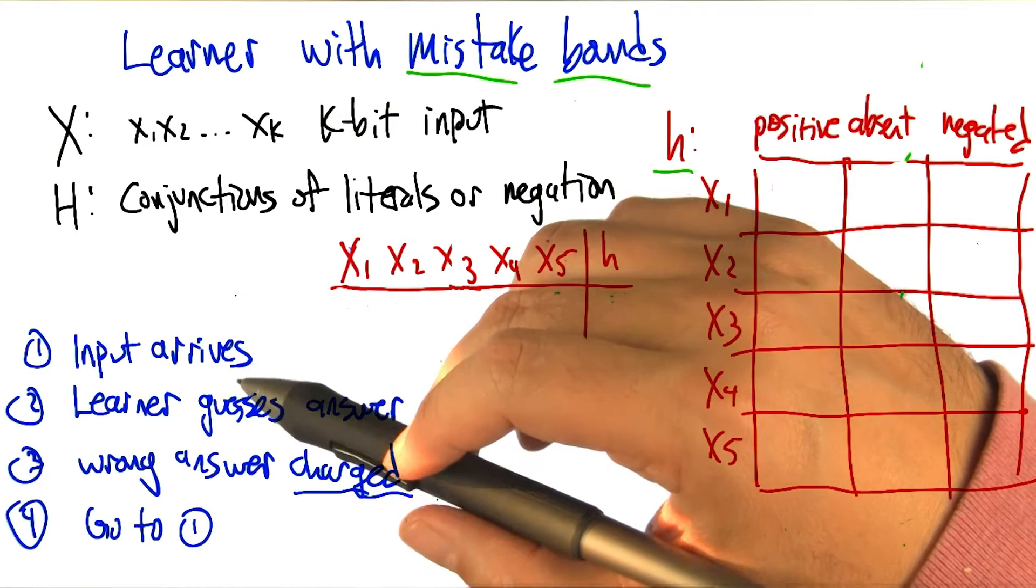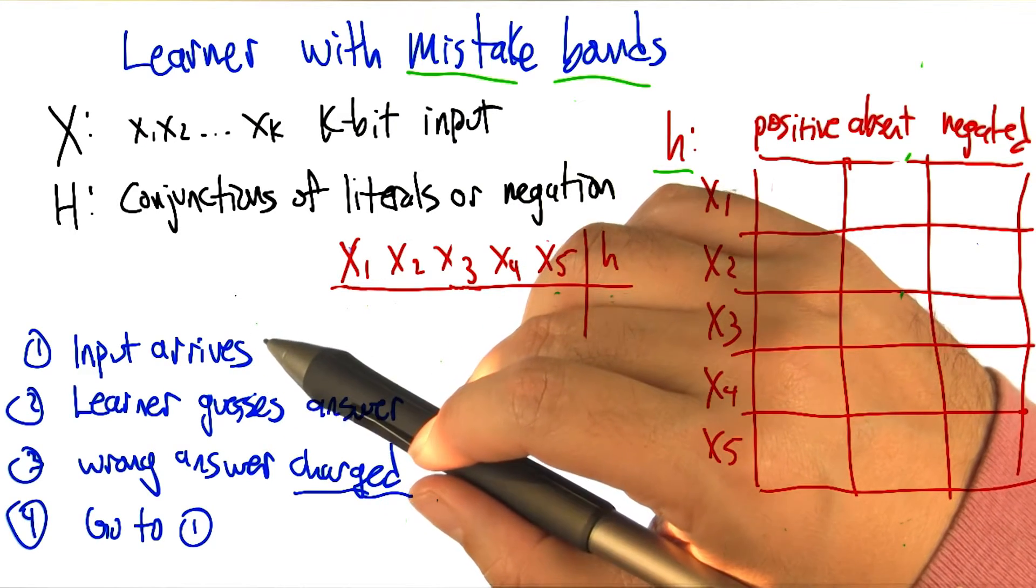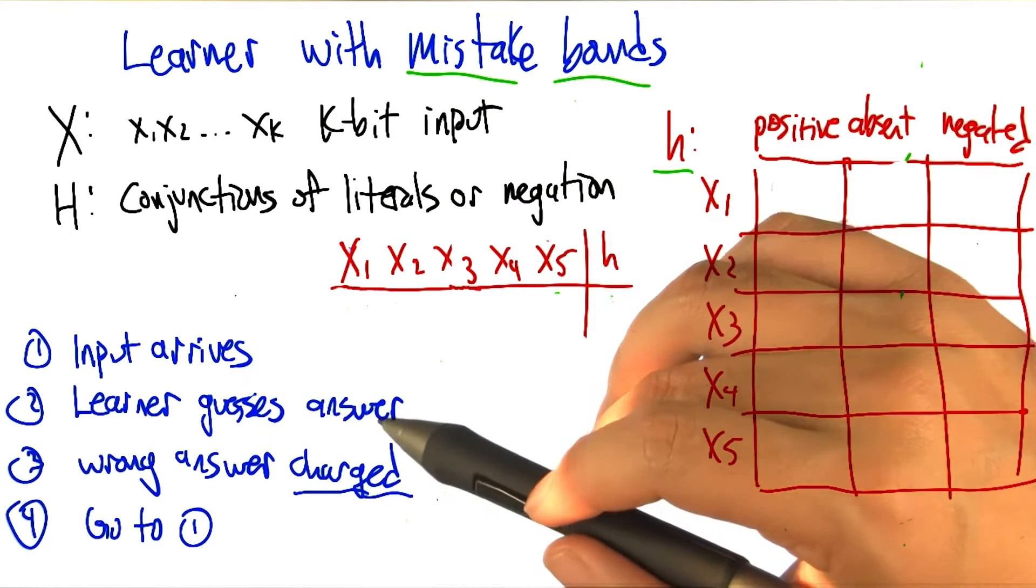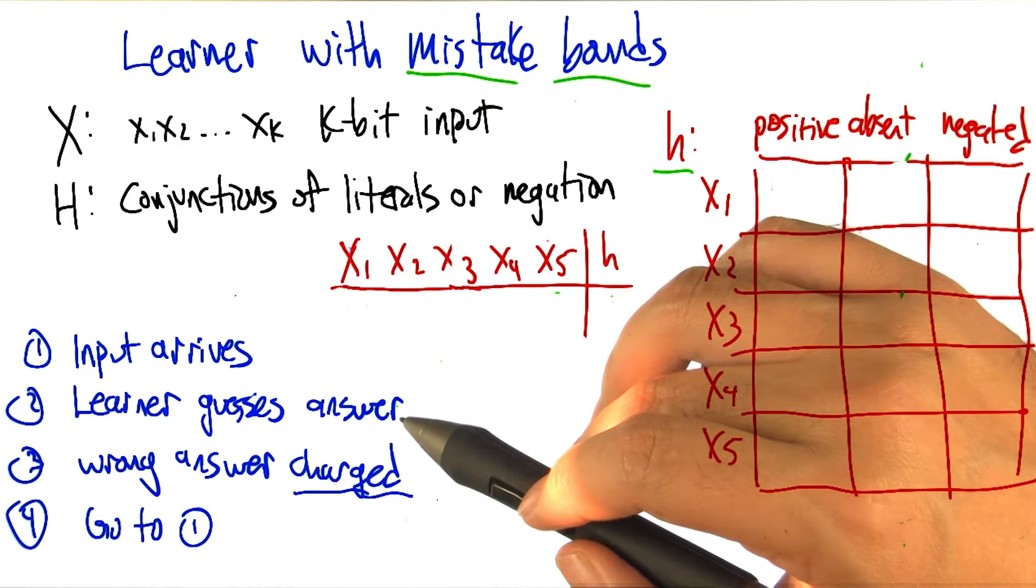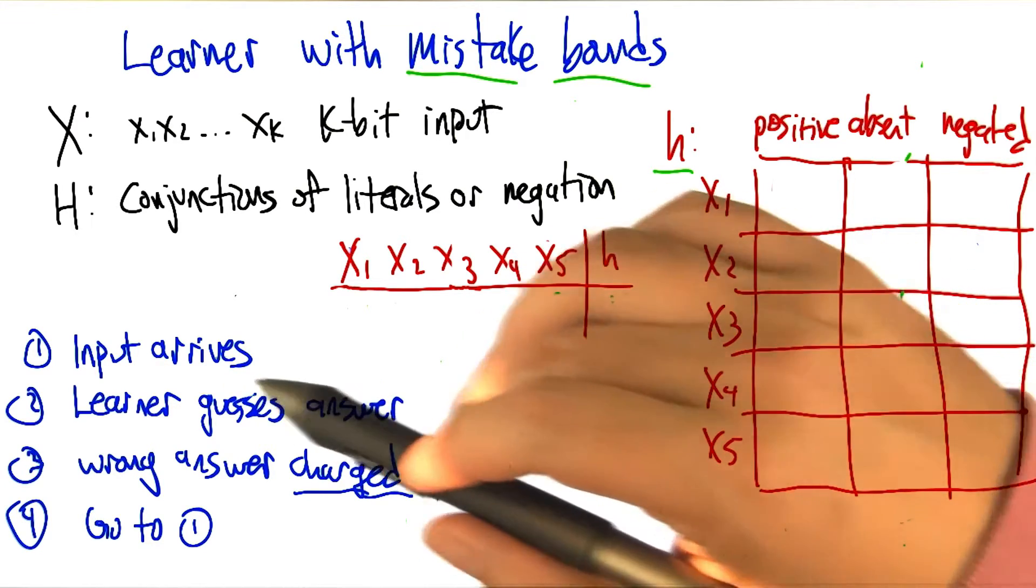The learner, maybe the learner chose the input or maybe it came from a helpful teacher or maybe a malicious teacher. It turns out it's not going to matter. But the input's going to show up. The learner's going to guess the answer. So it doesn't have to now guess the hypothesis and get that right. It just has to get the output correct for this input.